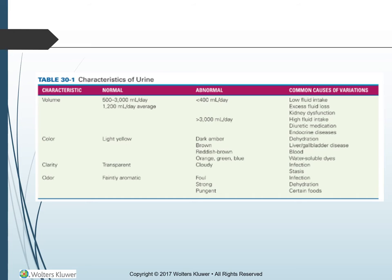Cloudy urine means infection. Clarity is usually transparent; if cloudy, that is abnormal and indicates infection and stasis — meaning the urine is sitting, not getting excreted, so bacteria are growing. Odor should be faintly aromatic normally. Abnormal is a foul, strong, or pungent odor. Causes include infection, dehydration, and certain foods.